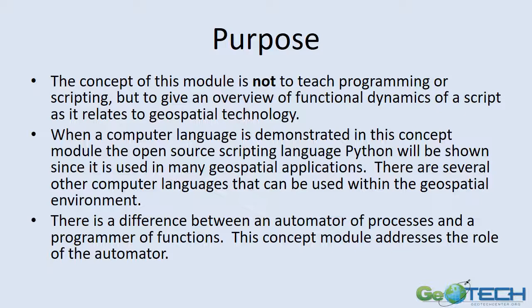In this concept module, we're going to try to make you an automator of processes and not a programmer of functions. Say you need to merge five counties together and then use that merged county boundary as a clipping tool to clip rivers out of a state file. There are lots of clicks that must be done with your mouse, but you can write that function in a few lines of code, and it will automatically do the process. If you write it properly, you can just change the input variables and it will do it for another series of counties.